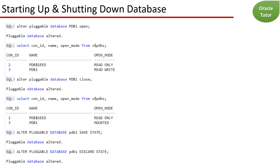To open a PDB, you can use the following command: ALTER PLUGGABLE DATABASE pdb1 OPEN. This command will change the mode of the PDB from mount to read write. Once the PDB is open, users can connect to it and start using it.